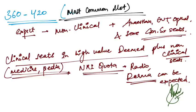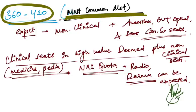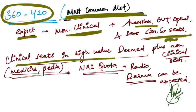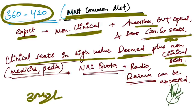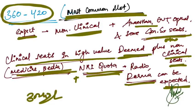If you are ranging around 360 to 420 marks, this is the most common slot I found. You can expect non-clinical plus anesthesia, ENT, ophthalmology, and some general surgery and orthopedics seats. In clinical seats in high value deemed colleges with fee structure of around 30 to 40 lakhs, and non-clinical seats you can get like high value seats like medicine and pediatrics, plus NRI quota seats like radiology and dermatology.